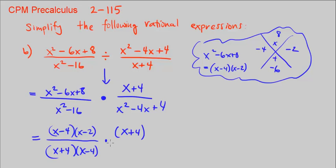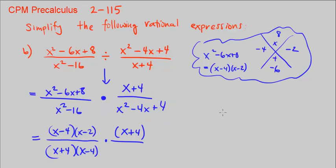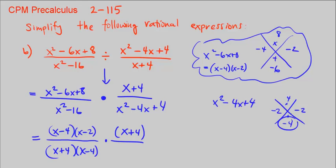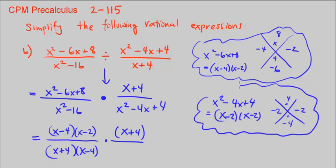In the numerator we just have x plus 4. In the denominator, let's factor x squared minus 4x plus 4 using the x-method: what multiplies to get 4 and adds to get negative 4. The factors of 4 include 2 and 2. Negative 2 times negative 2 multiplies to get positive 4 and adds to get negative 4. So that's x minus 2 times x minus 2.